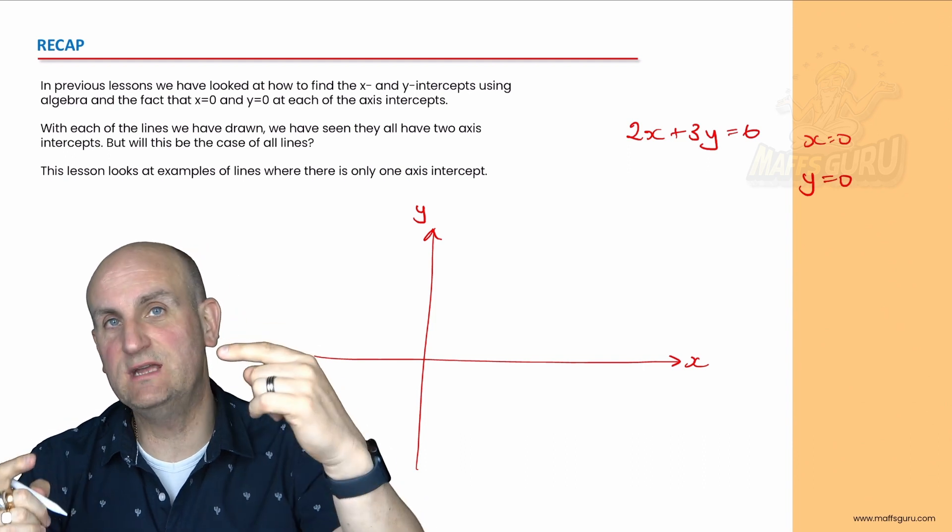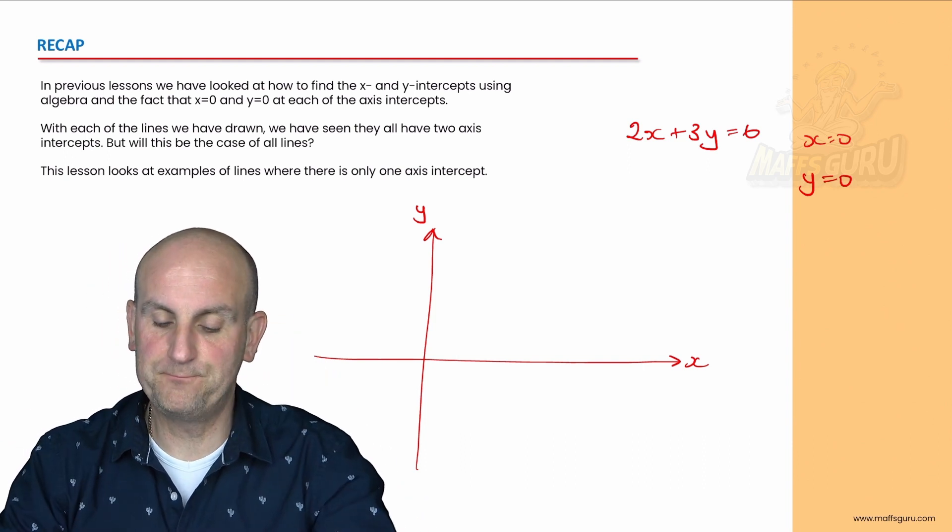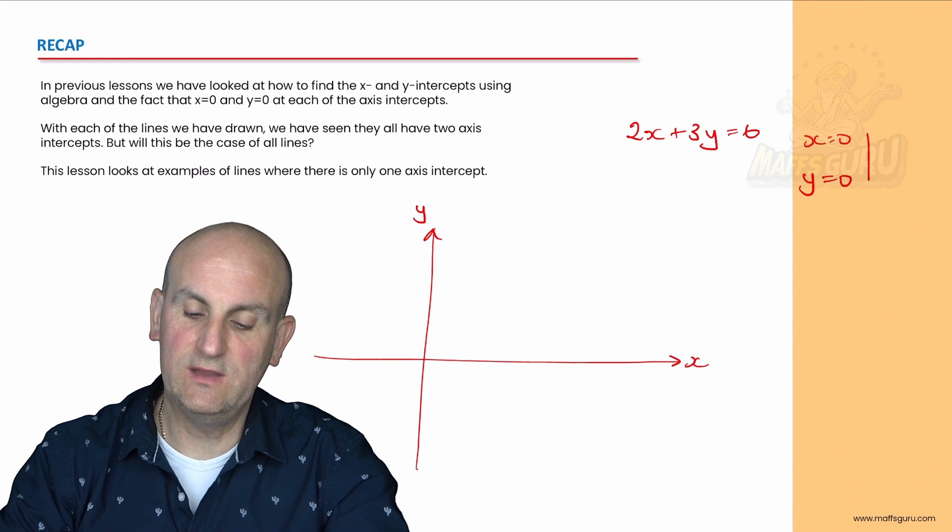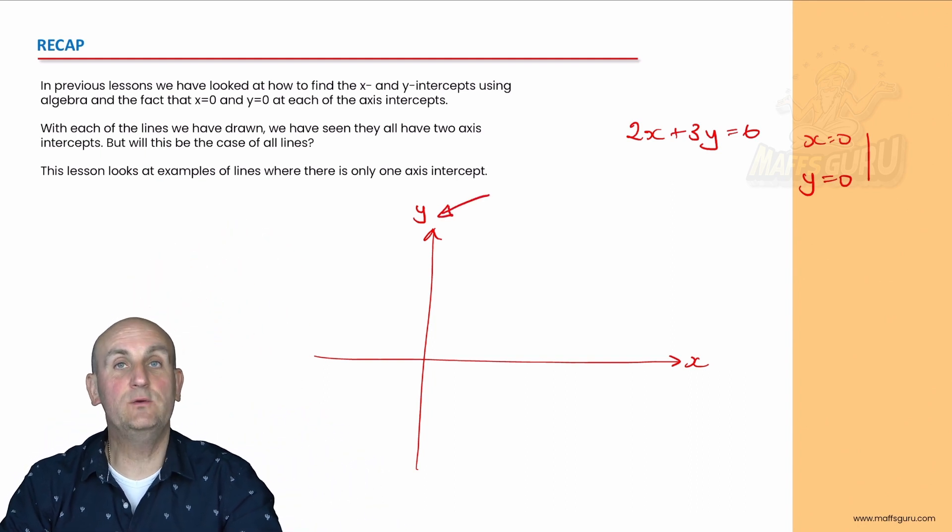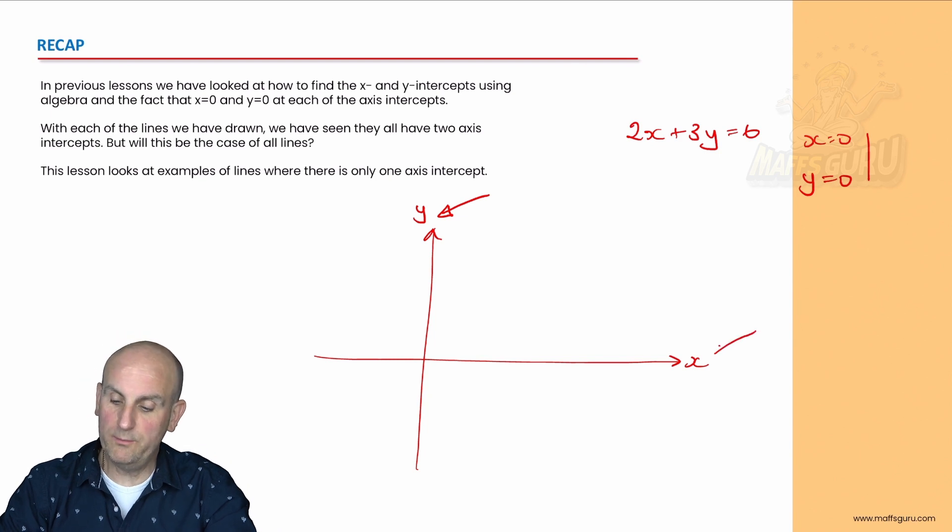Two points that we could join together to draw our straight line. The reason we use this is because all points along the y-axis have an x value of 0 and all points along the x-axis have a y value of 0. If you didn't understand this, load up my other videos on mathsguru.com or YouTube.